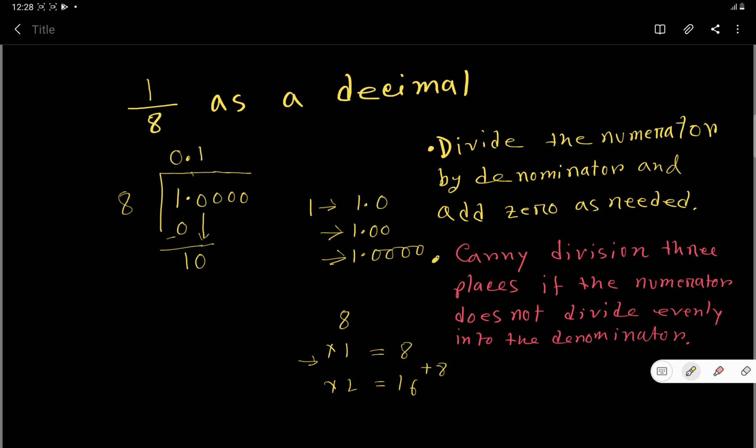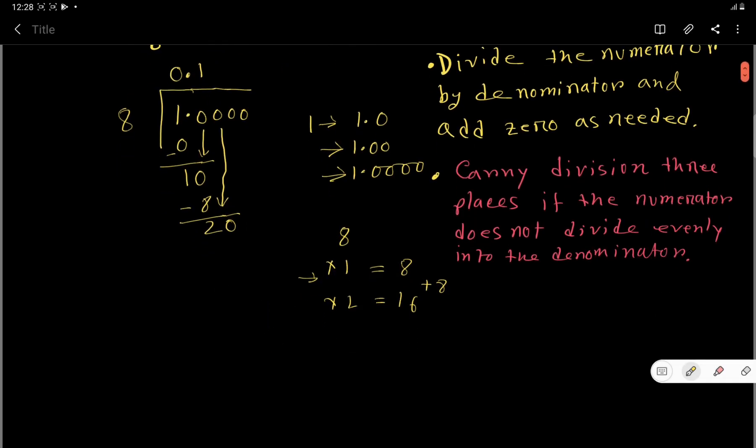Now subtract—2. Now bring down the second zero. Now you have to decide: 8 goes into 20 how many times? You can determine this using the multiplication table. 8 times 3 gives us 24.